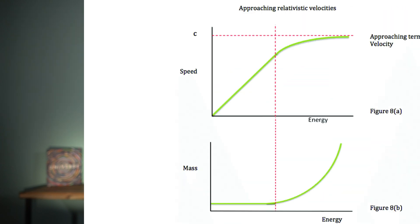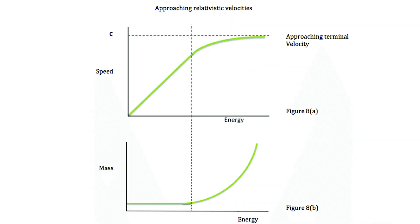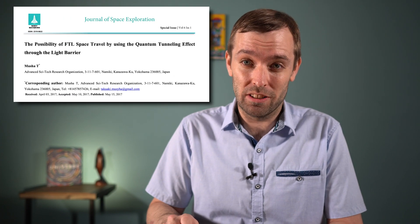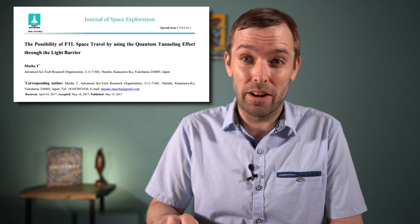You've likely heard that accelerating anything to or above light speed is impossible. Einstein's theories of relativity tell us that as an object approaches the light speed barrier, its mass will approach infinity, and it would take an infinite amount of energy to get there. But there might be a quantum loophole around this barrier.